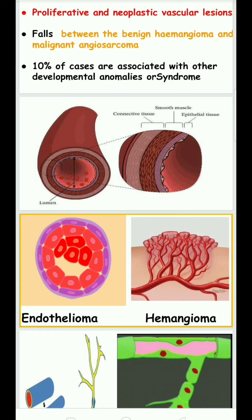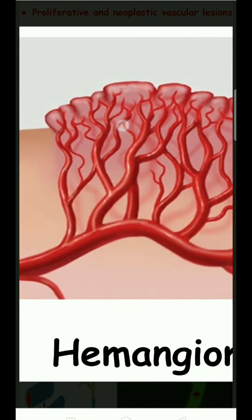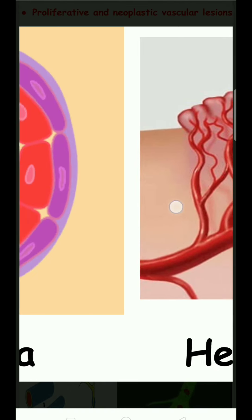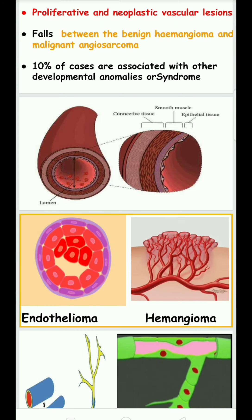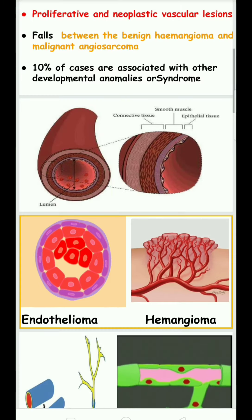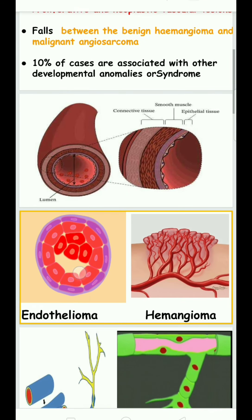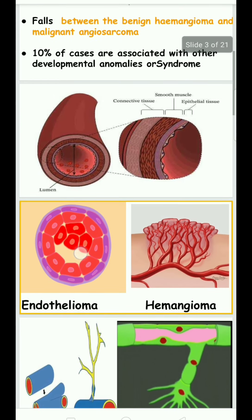Hemangioma is characterized by an increase in blood vessel capillaries and increase in protein. Angiosarcoma involves endothelial cells that proliferate at a higher rate and undergo metastasis, so it is called angiosarcoma. Hemangioendothelioma is intermediate between hemangioma and angiosarcoma, showing characteristics of both.